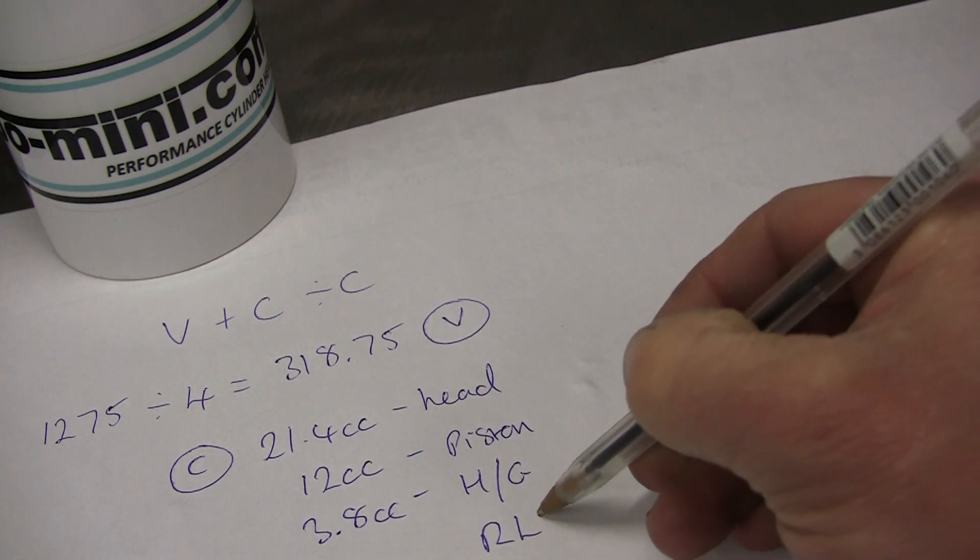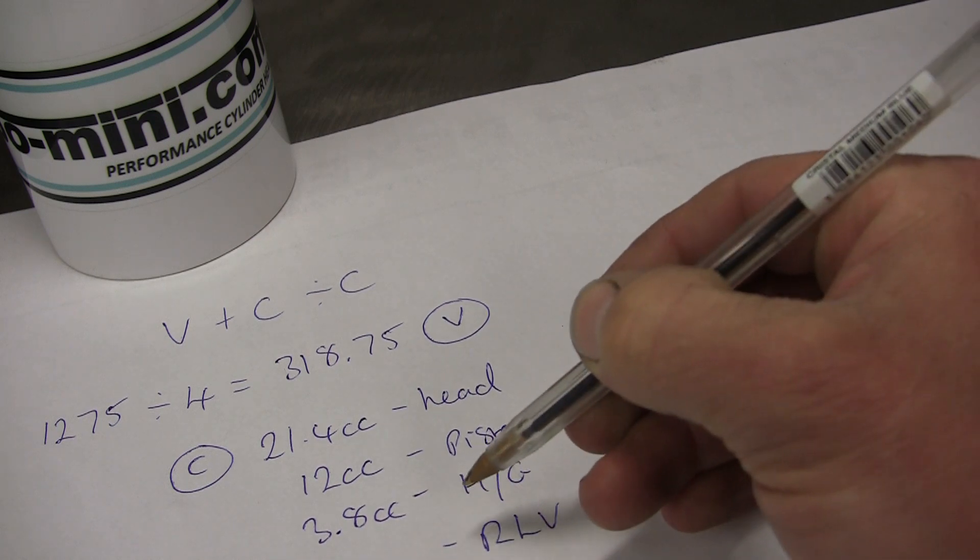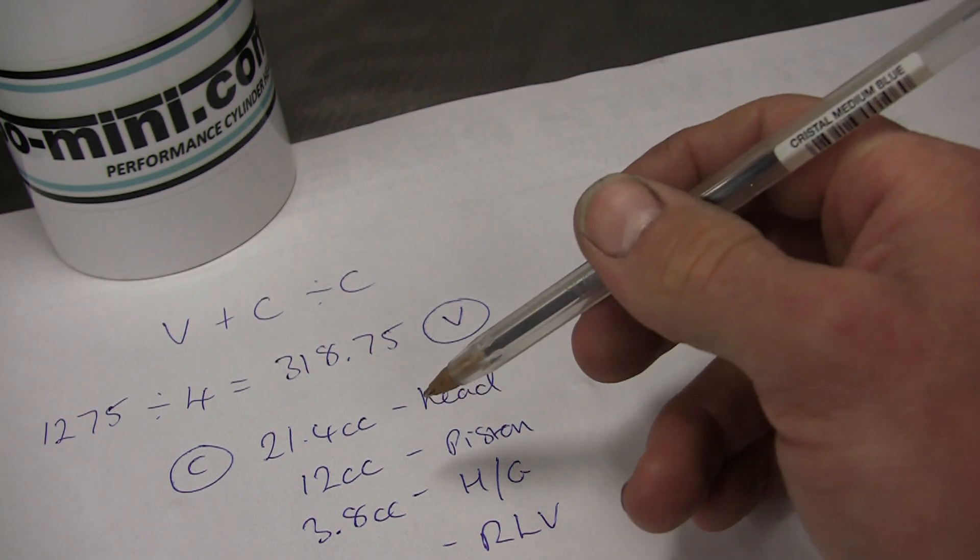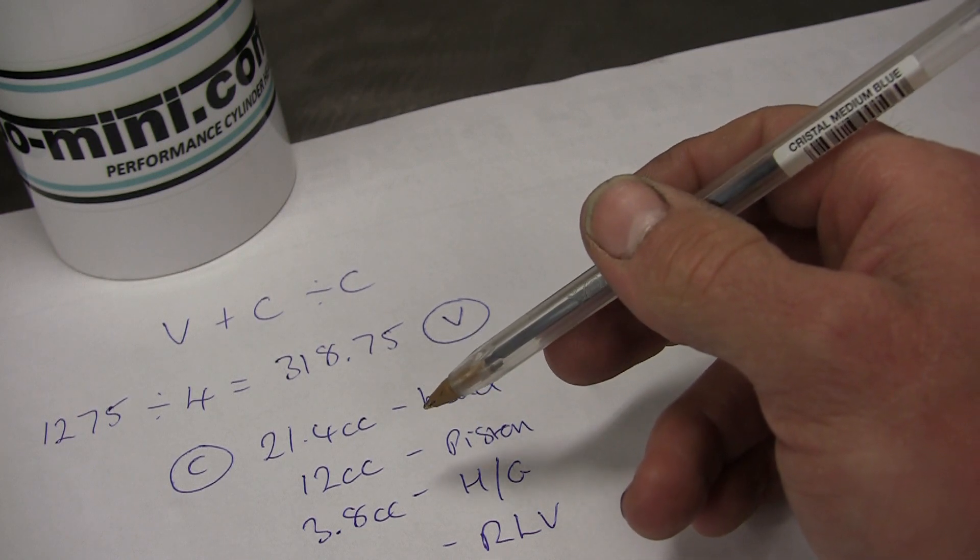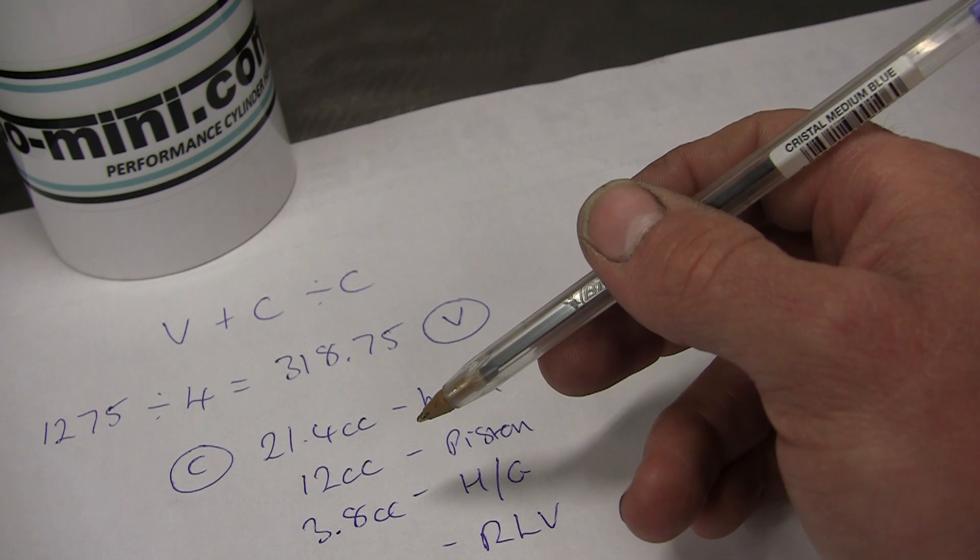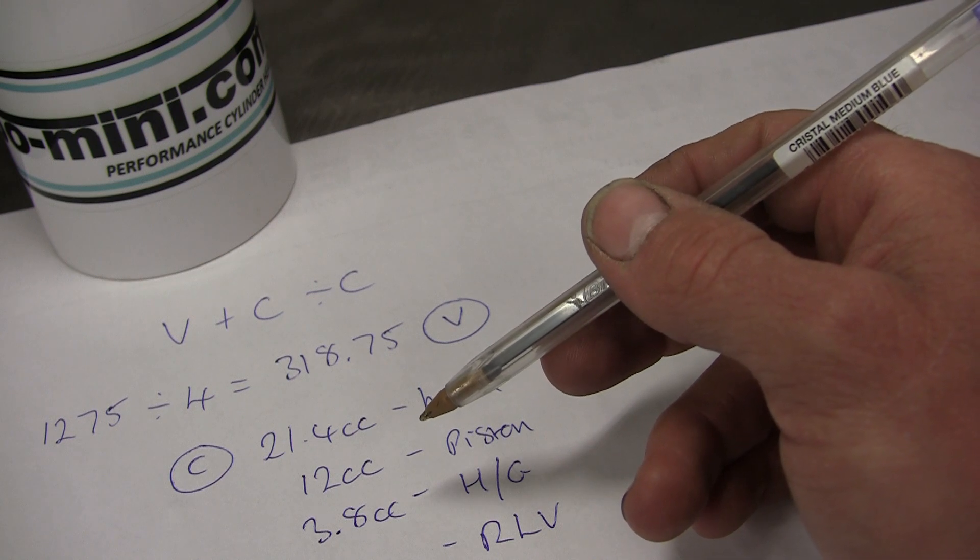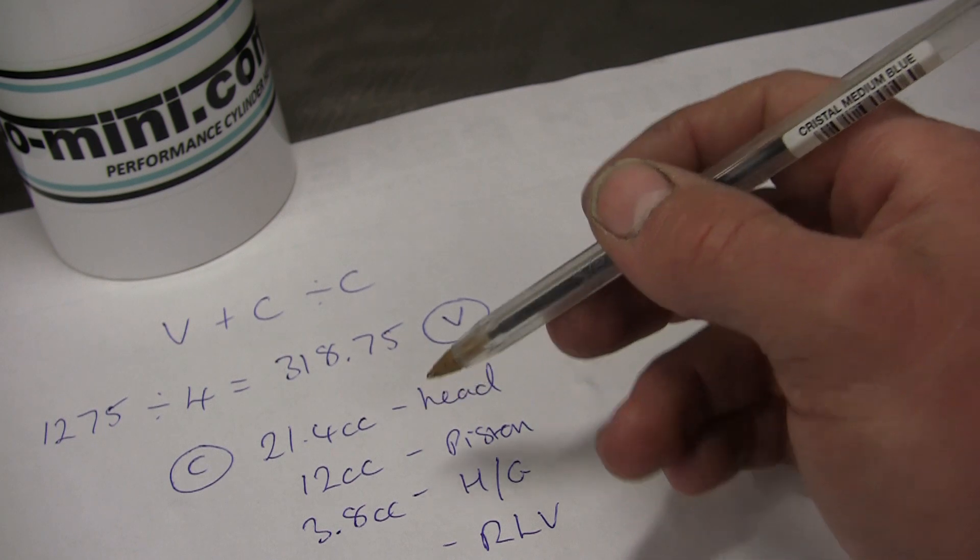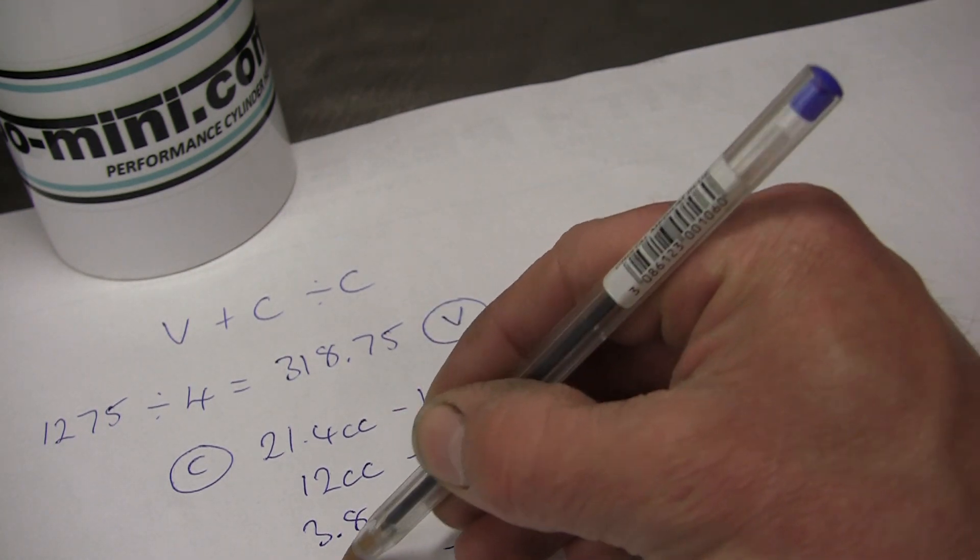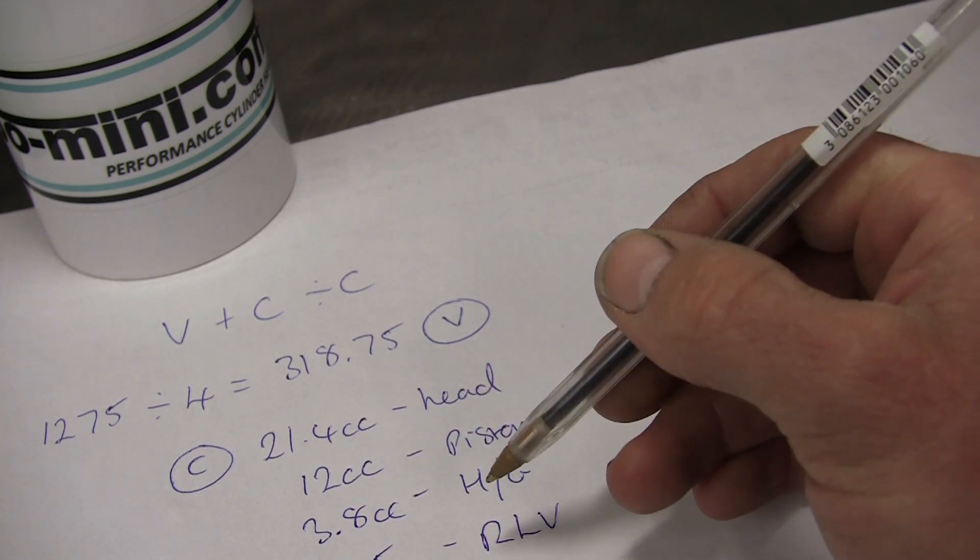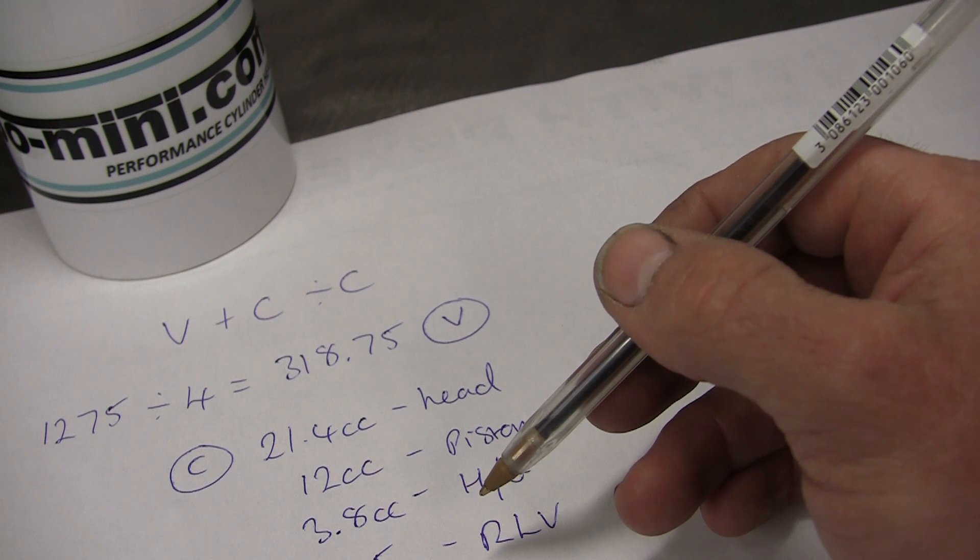The final thing is the ring land volume. You can calculate that, but it is a bit more complex. To be honest, they don't vary that much. Unless you're wanting to get super accurate, you're talking from about 0.4 or 0.5 cc to about 0.7 cc variation generally, so it's next to nothing. I'm going to put 0.5 cc.